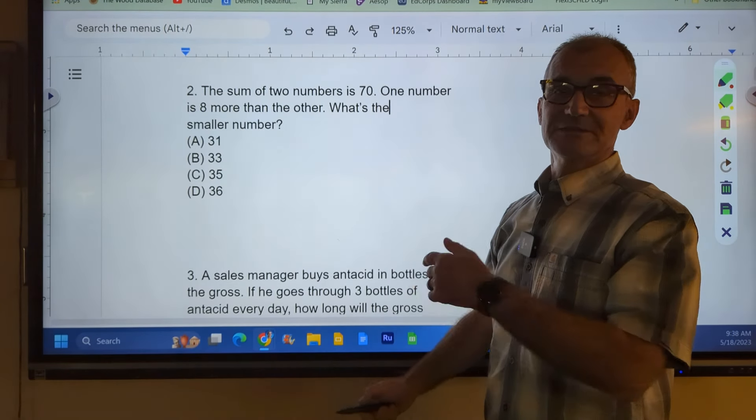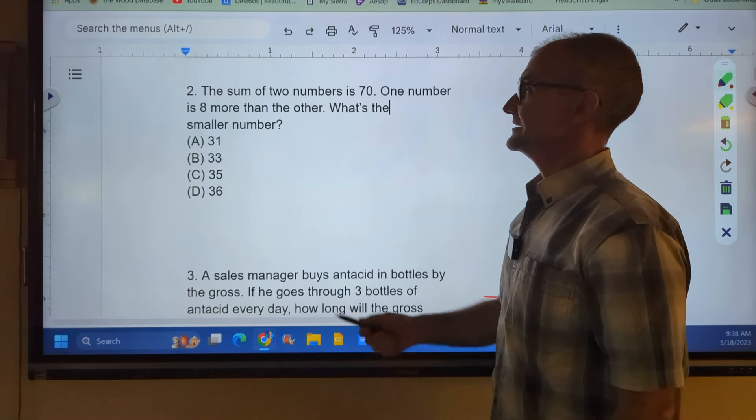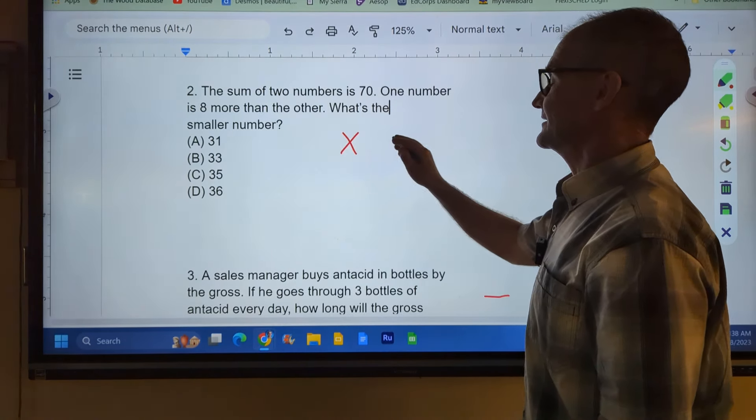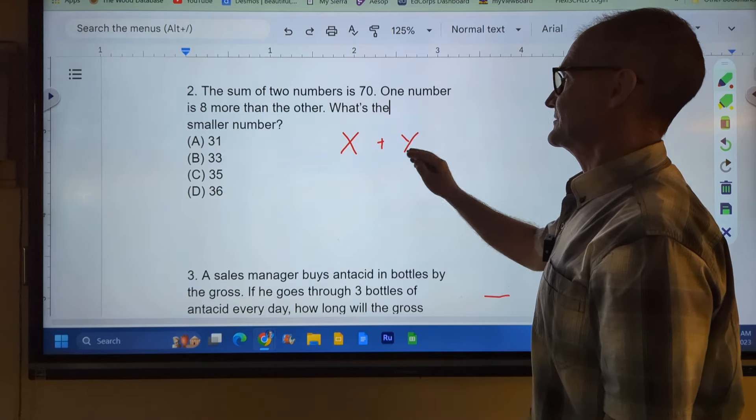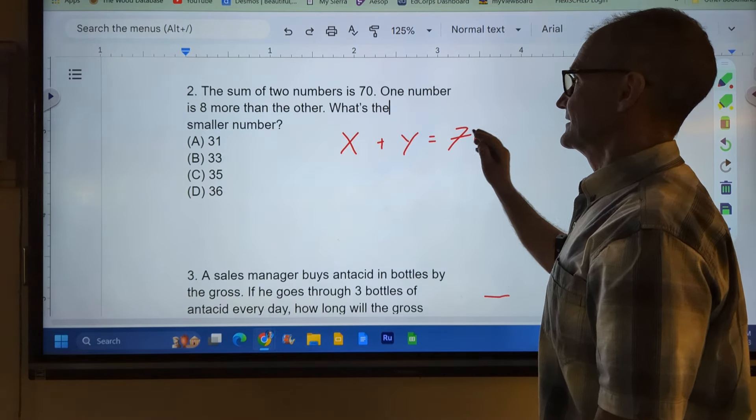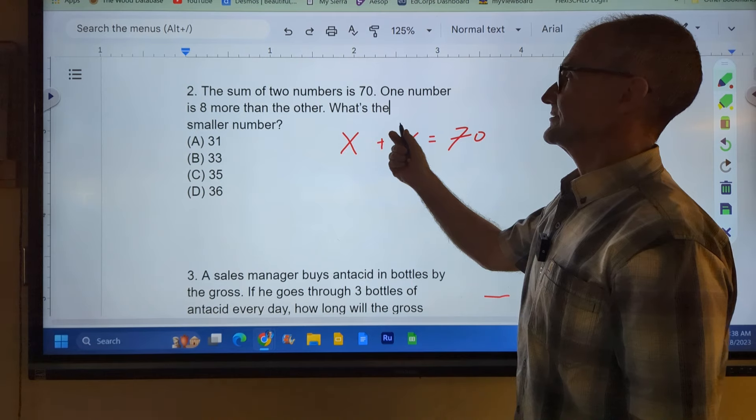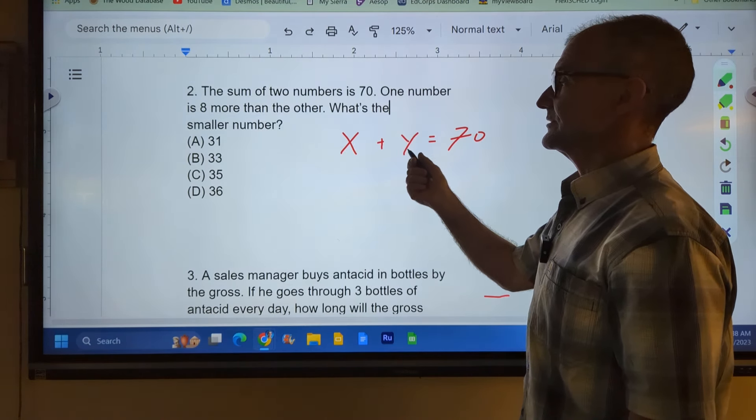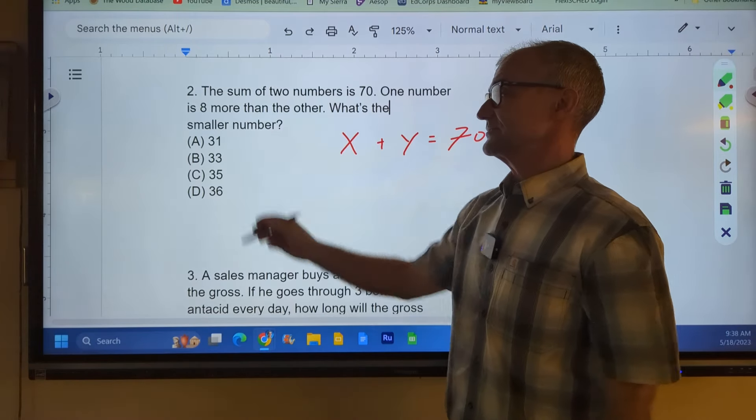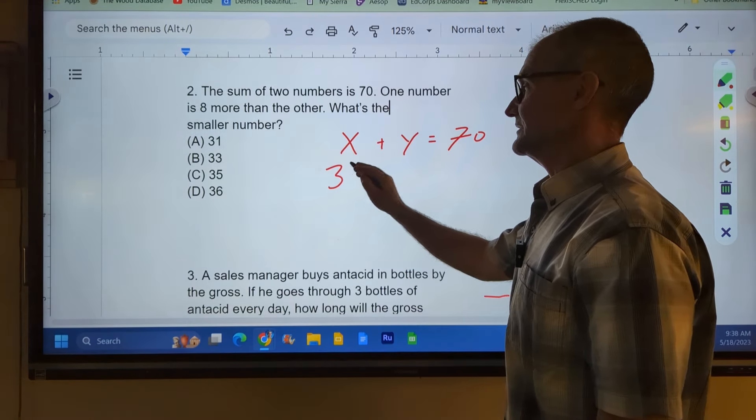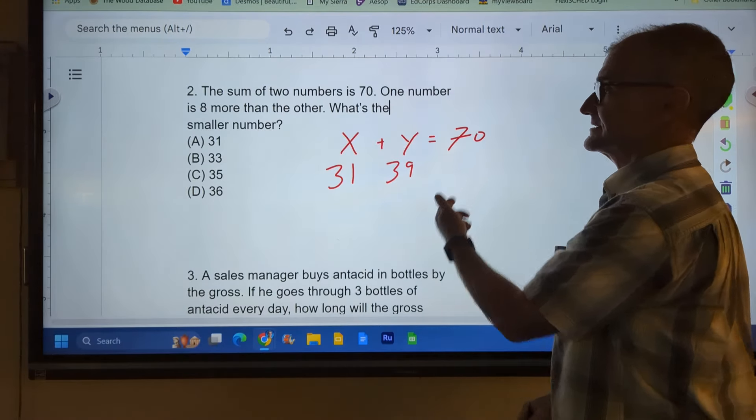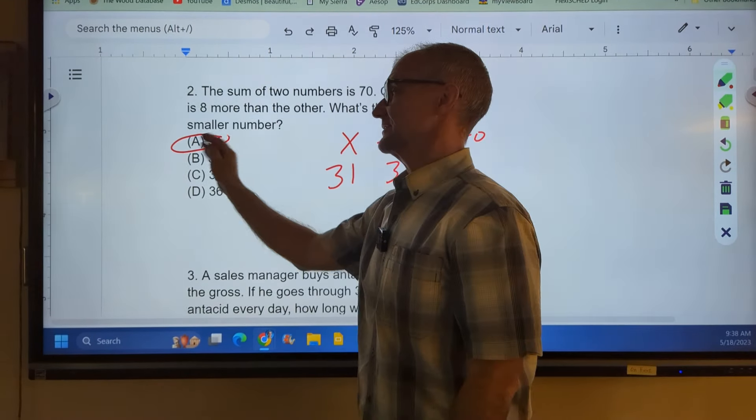Problem number two, pause the video, do this, and then watch how I do it. The sum of two numbers is 70. So I have these two numbers right here. X plus some other number is 70. One number is 8 more than the other number. What's the smaller number? So Y has to be 8 more. We could just quickly pick values and try it out. 31 plus 8 more, 39. Well, that is actually 70. That one works right there.